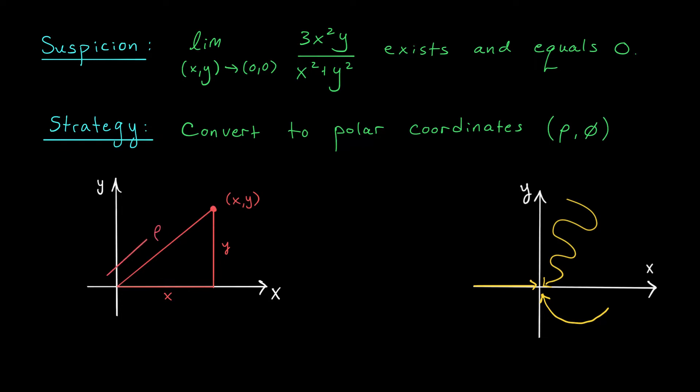Now since ρ represents a length, ρ is always non-negative. Rho is greater than or equal to 0. Our second quantity φ tells us the position of our line segment relative to the positive x-axis. It's this angle here, the angle made between the positive x-axis and our line. We can always assume that φ is between 0 and 2π.